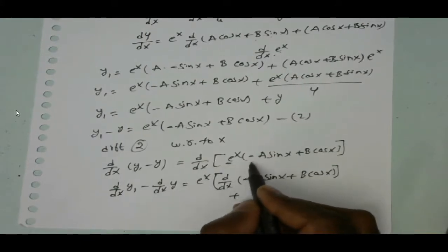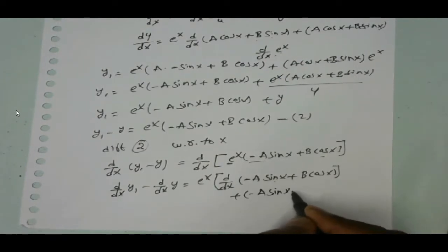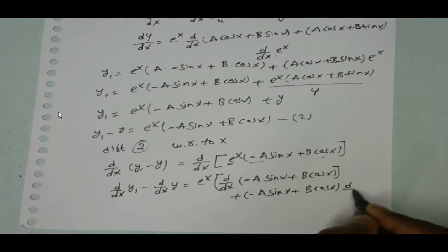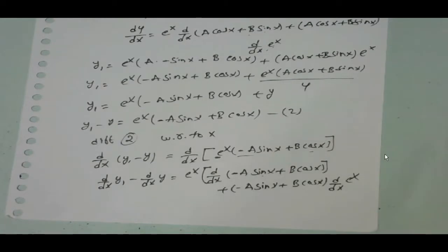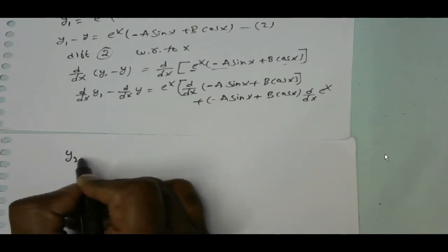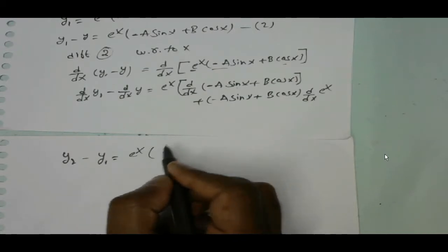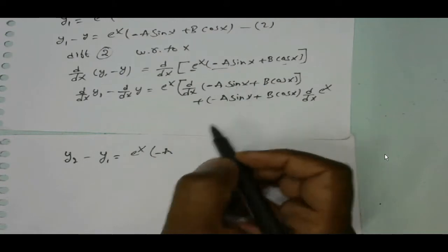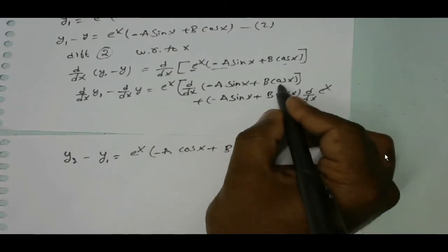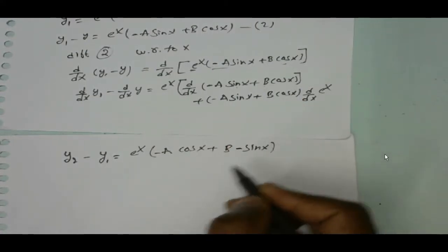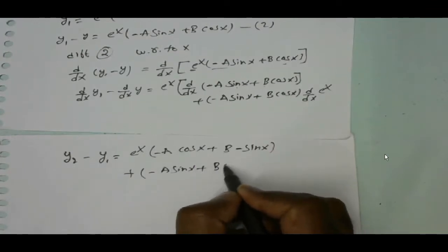Continuing with the uv formula: u into v dash plus v into u dash — that is minus a sin x plus b cos x into d by dx of e power x. d by dx of y₁ means y₂, and d by dx of y means y₁. So y₂ minus y₁ equals e power x into minus a cos x plus b into minus sin x, plus minus a sin x plus b cos x.